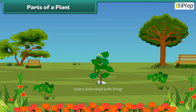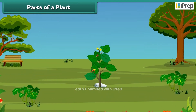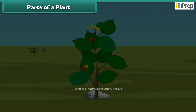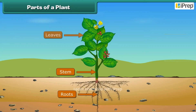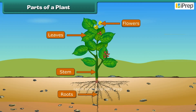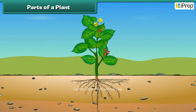Let us discuss the various parts of a plant. The main parts of a plant are roots, stem, leaves, flowers, and fruits. Let us know them one by one in more detail.